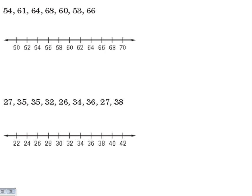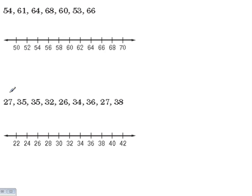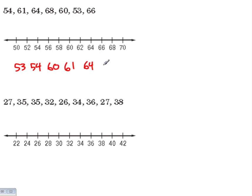In this exercise, we're going to be constructing a box and whiskers plot for each set of data. The first step we have to take is to put the numbers in ascending order. So for this exercise, we have 53, 54, 60, 61, 64, 66, and 68.